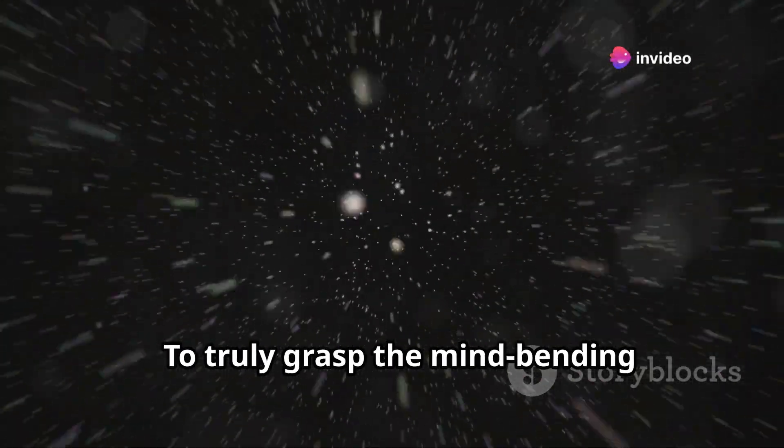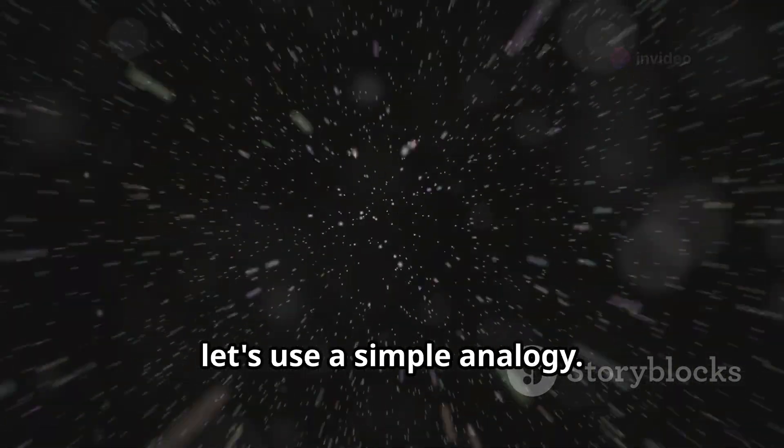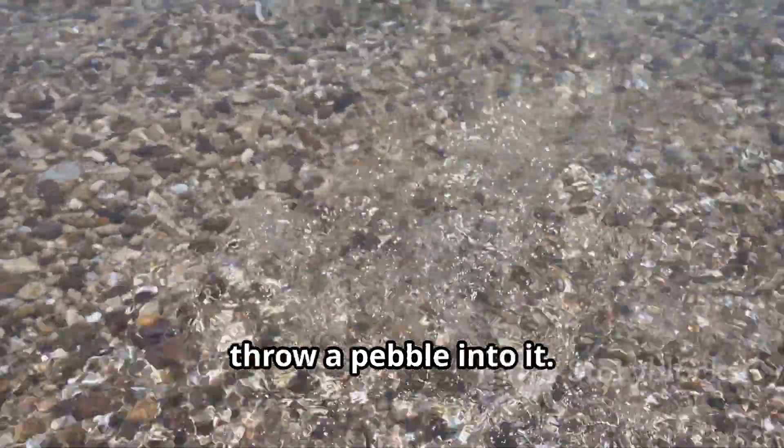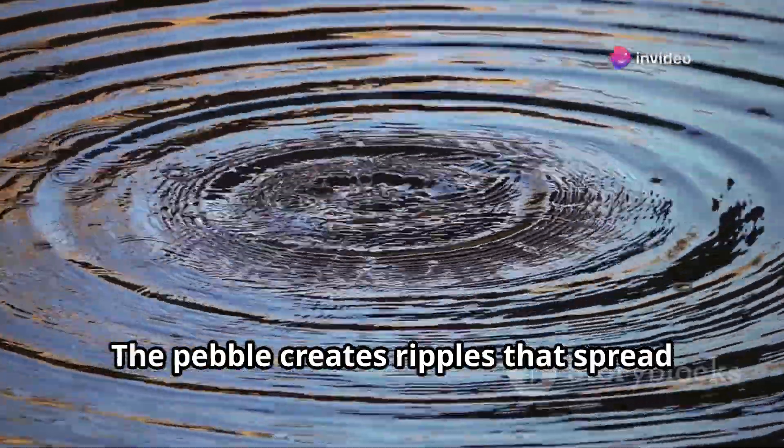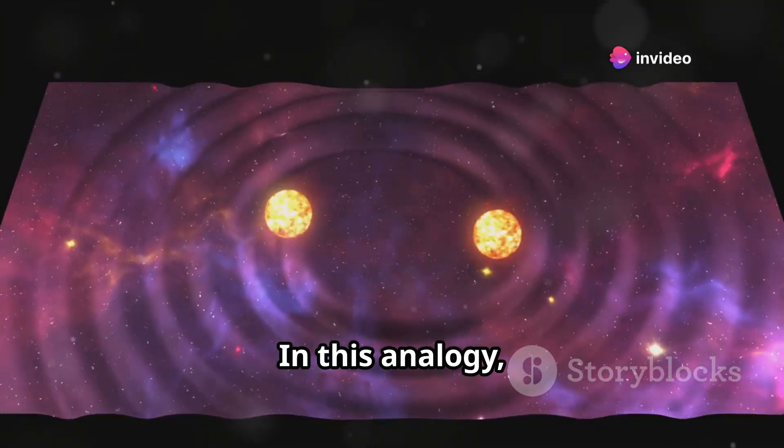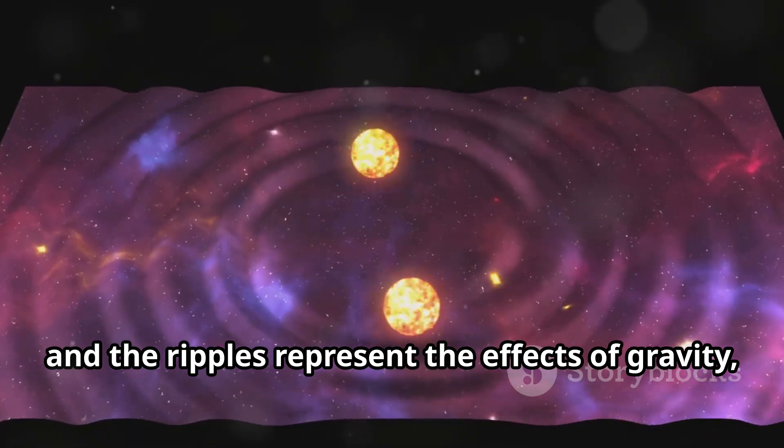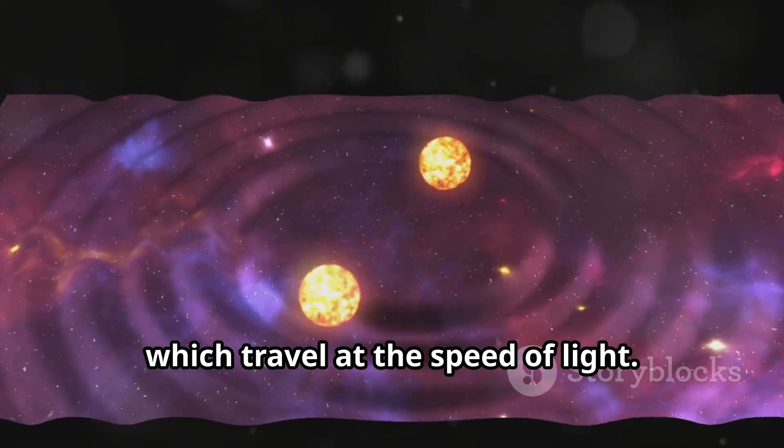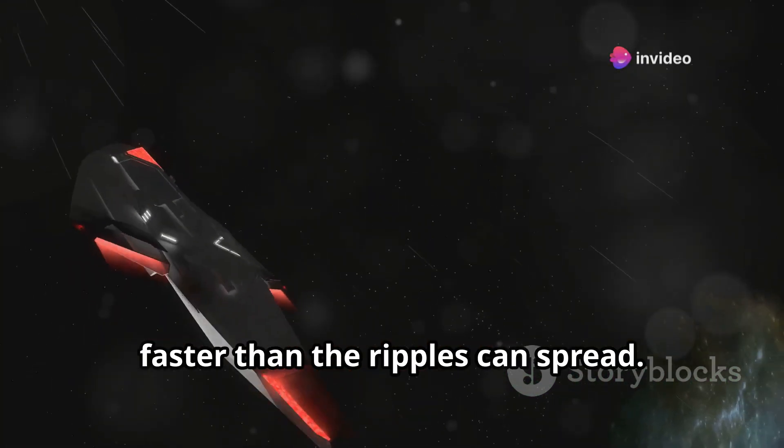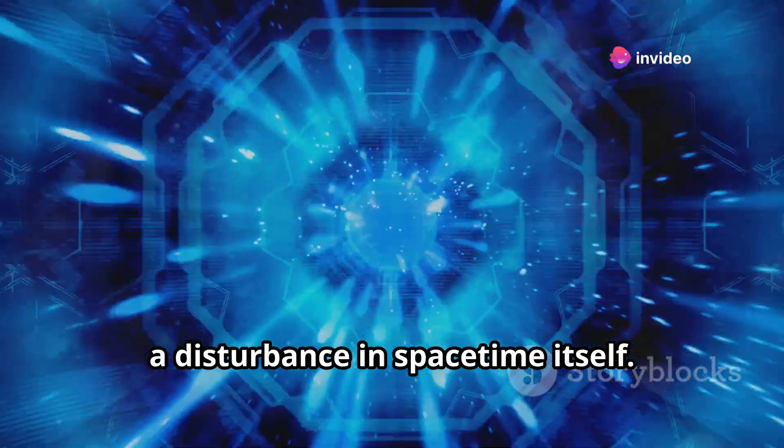To truly grasp the mind-bending implications of faster-than-light travel, let's use a simple analogy. Imagine a perfectly still pond. Now throw a pebble into it—the pebble creates ripples that spread outward from the point of impact. In this analogy, the pond represents space-time and the ripples represent the effects of gravity, which travel at the speed of light. Now imagine something moving through the pond faster than the ripples can spread. This would create a shockwave, a disturbance in space-time itself.